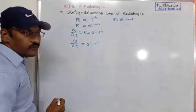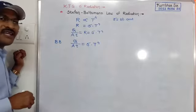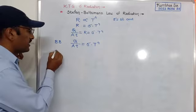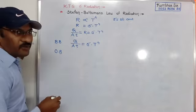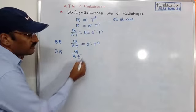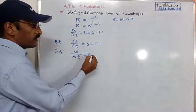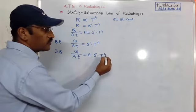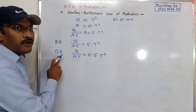If there is an ordinary body other than a perfect black body, for the ordinary body the same formula becomes: Q/At = E·σT⁴, where E is the coefficient of emission. This is the formula for perfect black body and this is the formula for ordinary body.